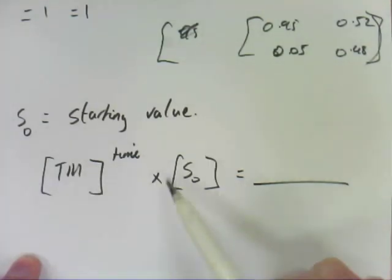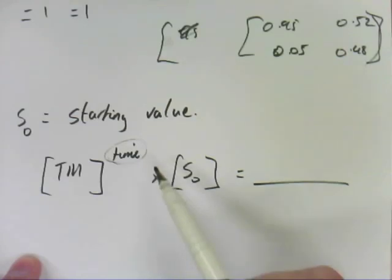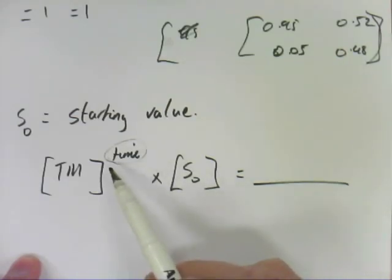So once you get your transition matrix and your starting value, this time thing here depends on the question, but it's how many months or weeks or days or whatever it is that the question is giving you. And you come out with an answer of what happens after that amount of time for that particular problem.